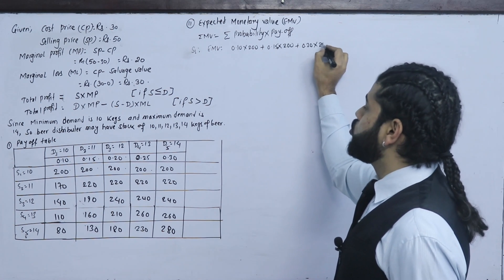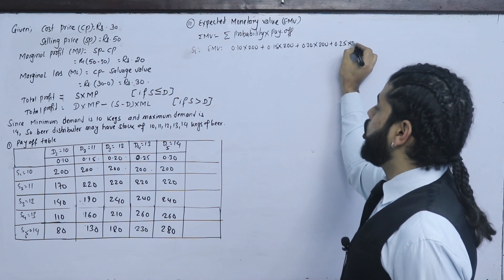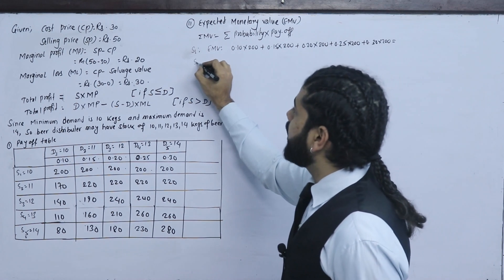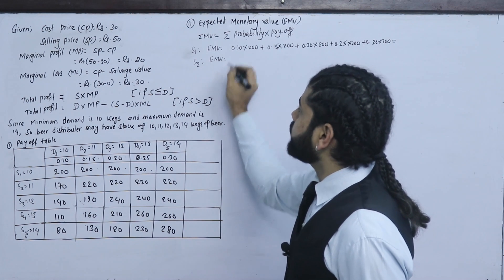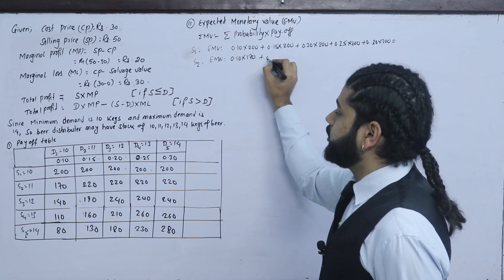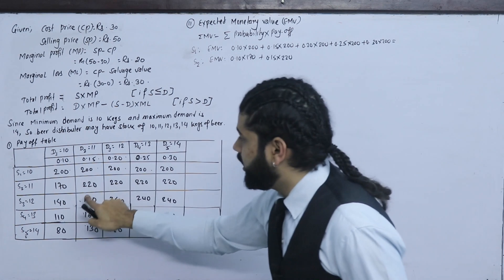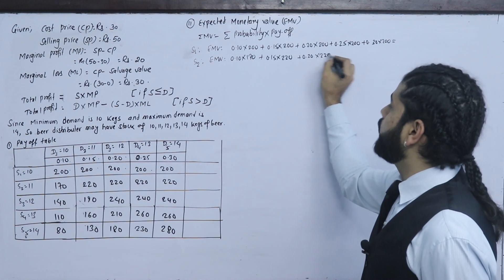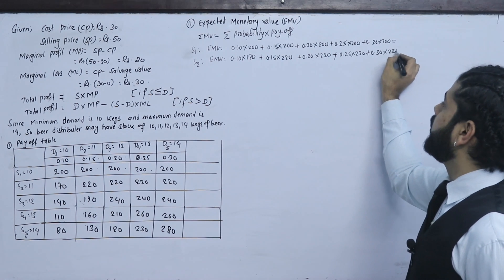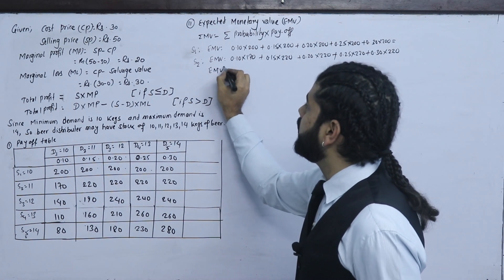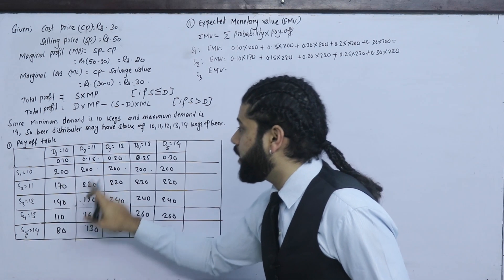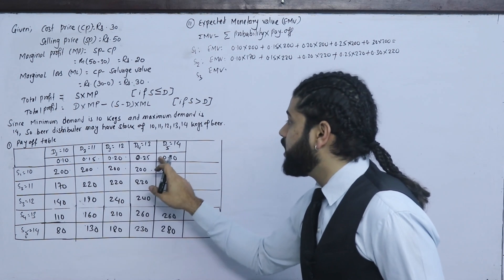For strategy S1 (stock 10): 0.10 into 200 plus 0.15 into 200 plus 0.20 into 200 plus 0.25 into 200 plus 0.30 into 200. For strategy S2 (stock 11): 0.10 into 170, plus 0.15 into 220, plus 0.20 into 220, plus 0.25 into 220, plus 0.30 into 220. For strategy S3 (stock 12): 0.10 into 140, 0.15 into 190, 0.20 into 240, 0.25 into 240, 0.30 into 240.